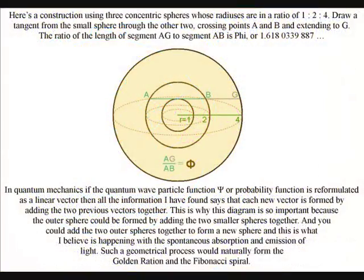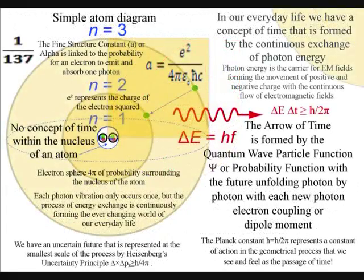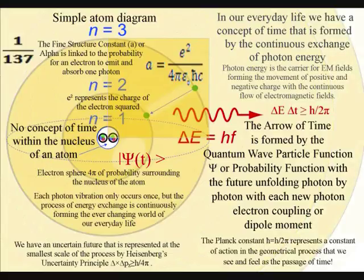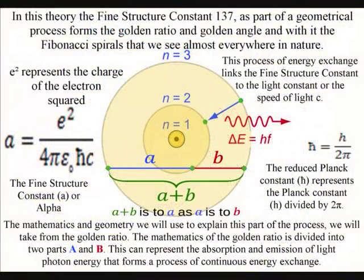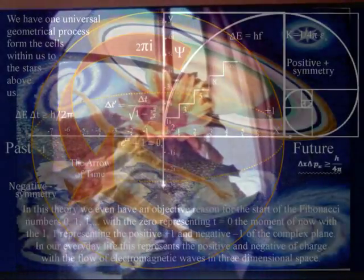This is why this diagram is so important because the outer sphere could be formed by adding the two smaller spheres together. And you could add the two outer spheres together to form a new sphere and this is what I believe is happening with the spontaneous absorption and emission of light. Such a geometrical process would naturally form the golden ratio and the Fibonacci spiral, and it would make no difference if the linear vector was formed by a sunflower growing towards the sun or the formation of the rings of Saturn over a period of time.